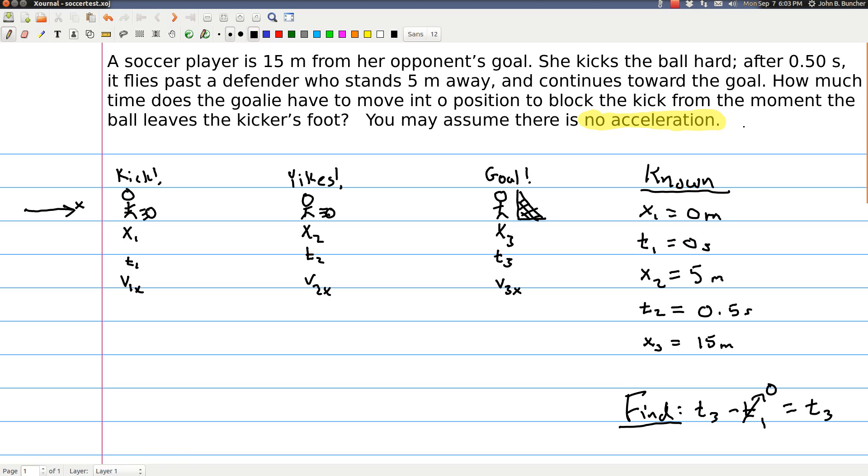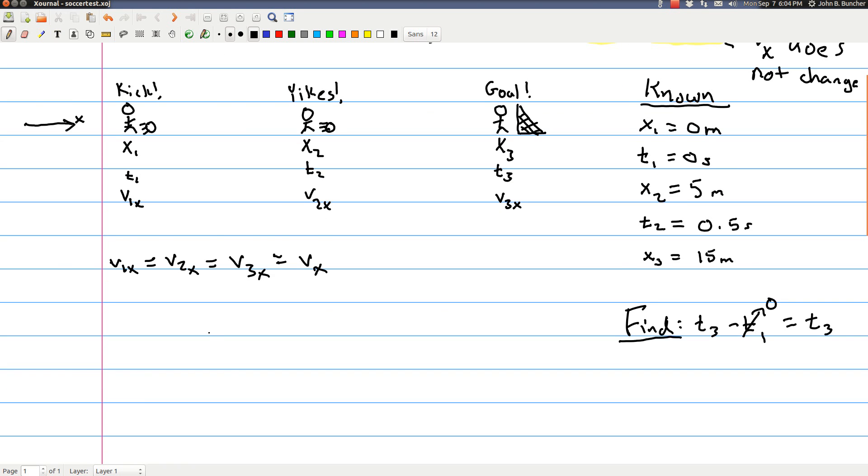Right? And if you remember from class, no acceleration means that the velocity does not change. Alright. So that gives us something else that we know, which is that v1x is going to be the same as v2x and v3x. So I'm just going to call that vx since that's the same. Okay. We'll move down a little bit to give ourselves some space to work.